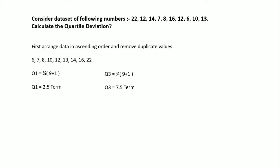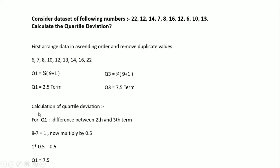To calculate Q1, we take the difference between the second and third terms. The second term is 7 and the third term is 8, so 8 minus 7 equals 1. Multiplying by 0.5 gives 0.5, which is then added to the second term: 7 + 0.5 = 7.5. So Q1 equals 7.5.